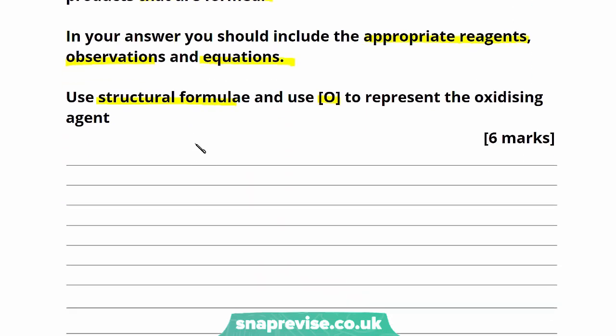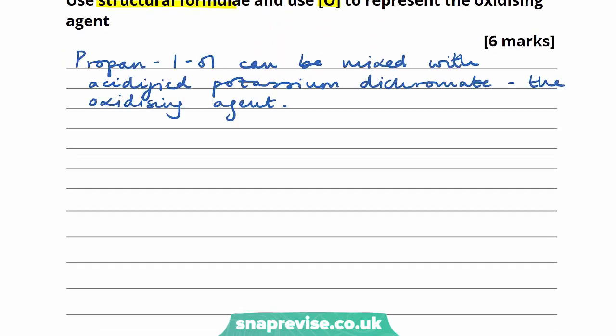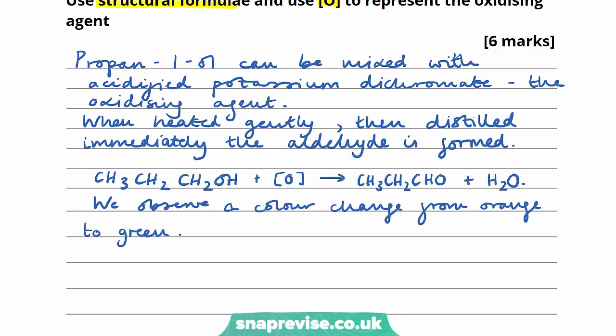I've initially explained that propan-1-ol, our primary alcohol, can be mixed with acidified potassium dichromate, our oxidizing agent. I've explained that when heated gently then distilled immediately, the aldehyde is formed, and I've given an equation for that. We can see the structural formula for propan-1-ol reacting with our oxidizing agent — represented as O in square brackets — to form our aldehyde, in this case propanal, and a molecule of water. And I've explained we observe a color change from orange to green.